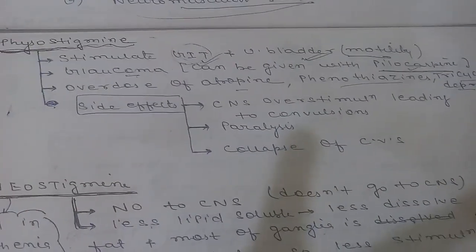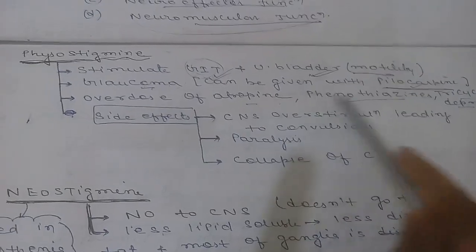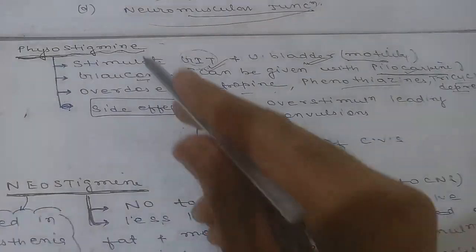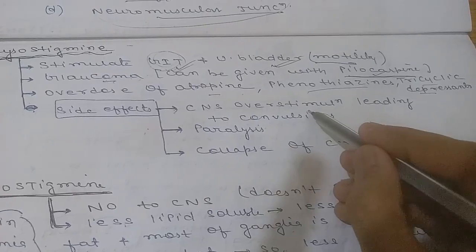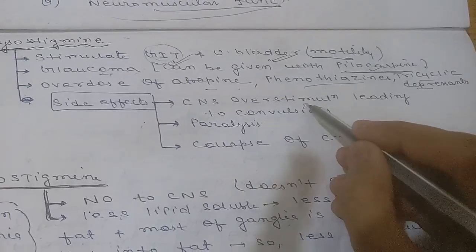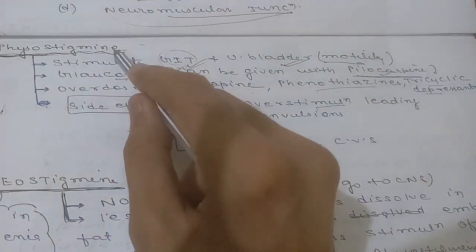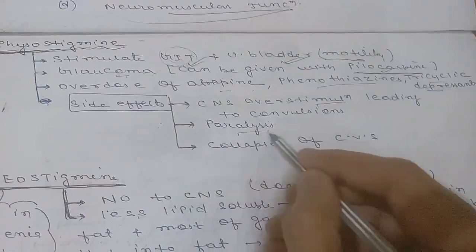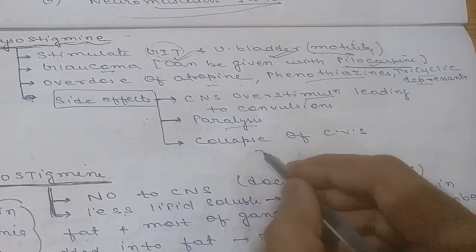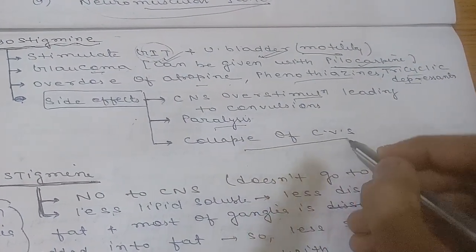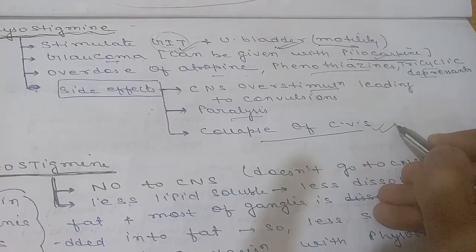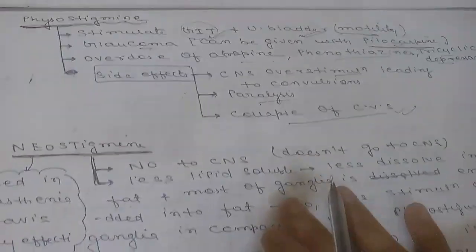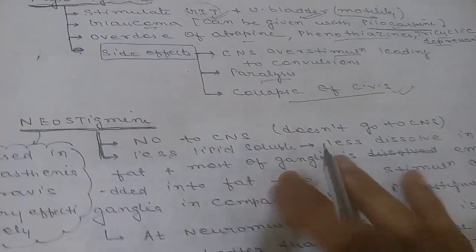Side effects of physostigmine include CNS over-stimulation because it can cross the blood-brain barrier. It can also cause paralysis and collapse of the cardiovascular system due to over-stimulation.